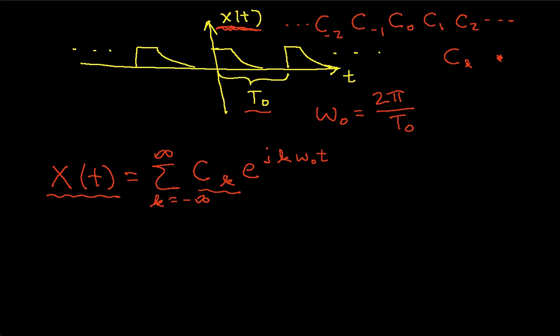The c sub k's are computed using the fact that these complex exponentials are orthogonal to each other for different values of k. I'm not going to go into a lot of detail what that means, but basically you use that orthogonality to get the following formulas for the c sub k.